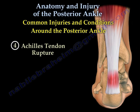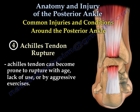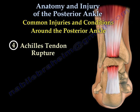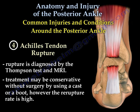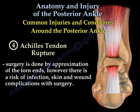The last condition is Achilles tendon rupture. The Achilles tendon can become prone to rupture with age, lack of use, or by aggressive exercise. It is diagnosed by the Thompson test and MRI. Treatment may be conservative without surgery by using a cast or boot; however, the re-rupture rate is high. Surgery is done by approximation of the torn ends; however, there is a risk of infection, skin, and wound complications with surgery.